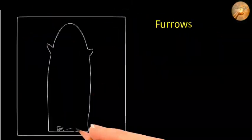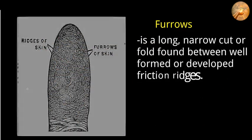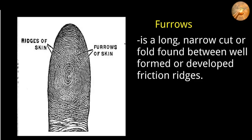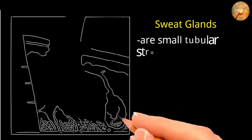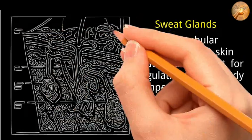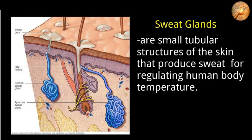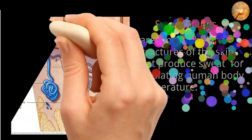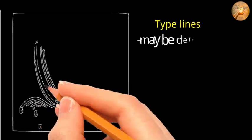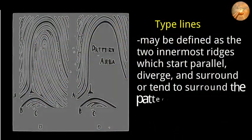A furrow is a long narrow cut or fold found between well-formed or developed friction ridges. Sweat glands are small tubular structures of the skin that produce sweat for regulating human body temperature; humans have three different types of sweat glands. Type lines may be defined as the two innermost ridges which start parallel, diverge, and surround or tend to surround the pattern area.